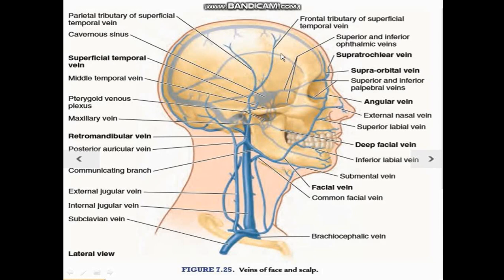These two veins carry deoxygenated blood from the scalp and join to form the superficial temporal vein. This superficial temporal vein descends downwards and joins with the maxillary vein to form the retromandibular vein.